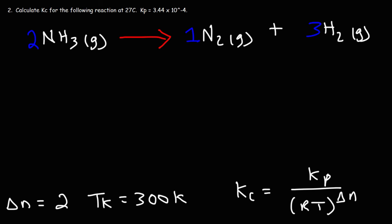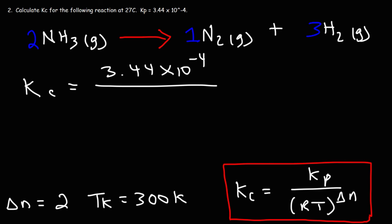Now let's go ahead and calculate Kc using this formula. So we have Kc is equal to Kp, where Kp is 3.44 times 10 to the minus 4, divided by our R value, which is 0.08206, and not the other R value of 8.3145, times the Kelvin temperature of 300. And then it's raised to delta N, which is positive 2 in this example.